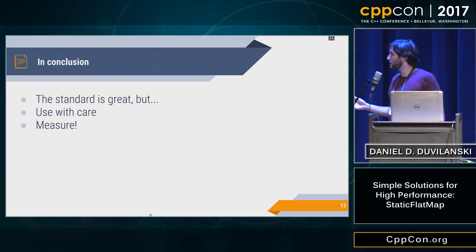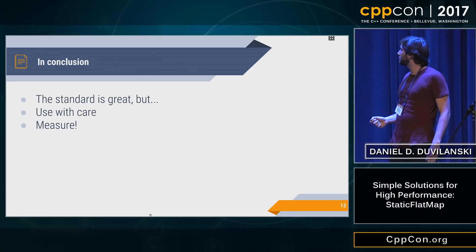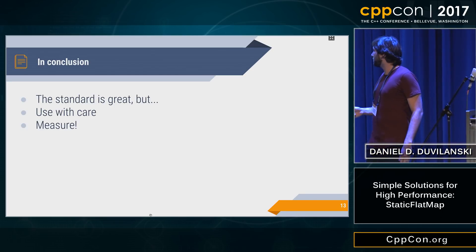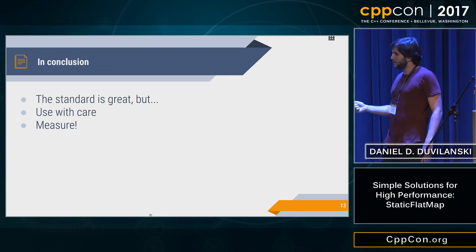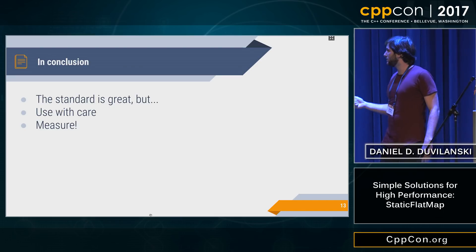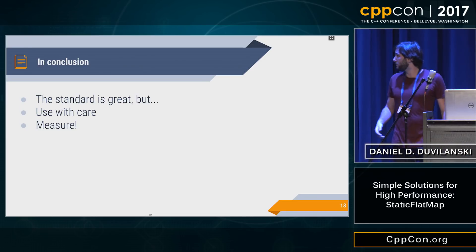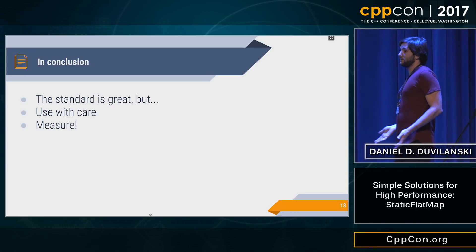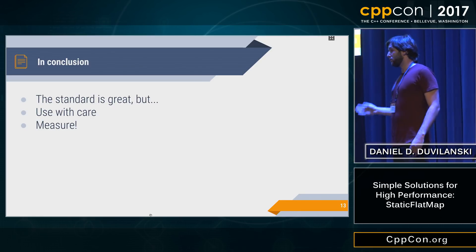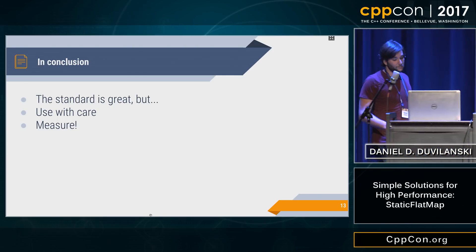In conclusion, the standard STD map is great, but it doesn't always fit our needs, so maybe we need another solution sometimes. Use this — but use it with care. Remember it's good for pre-allocated maps where you know the keys in advance, if it's small, and if you need more copies and iterations than inserts and removes. And always measure. You could go and try to use it thinking it might be faster, but if you don't measure, you don't actually know. Always measure, even if it looks like it should be good.